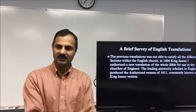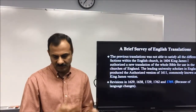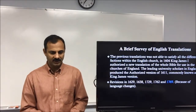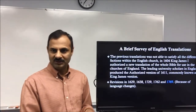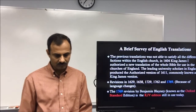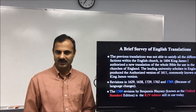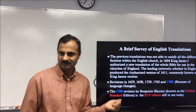These were scholars who understood the Greek text and translated the Bible into English. That is how we got the King James Version from the original Greek text. Of course, revisions were made because language is a moving target — revisions occurred in 1629, 1638, 1729, 1762, and 1769 because of language changes. The 1769 revision by Benjamin Blayney, known as the Oxford Standard Edition, is the KJV edition still in use today.